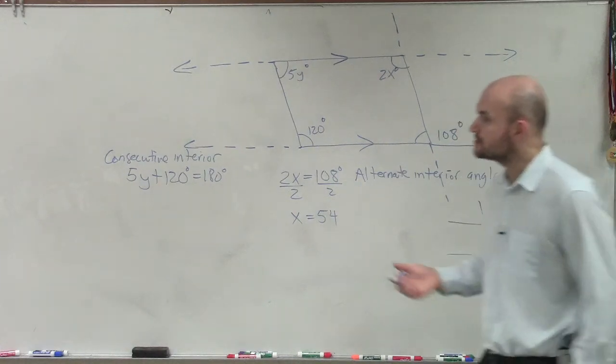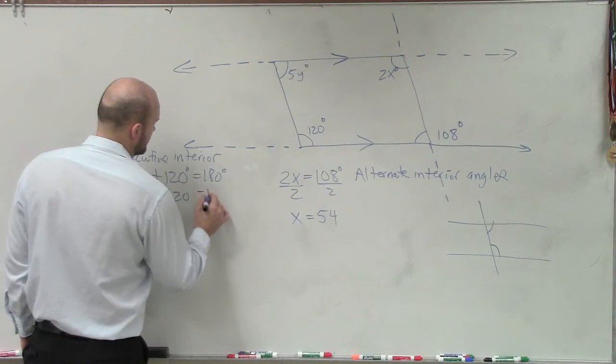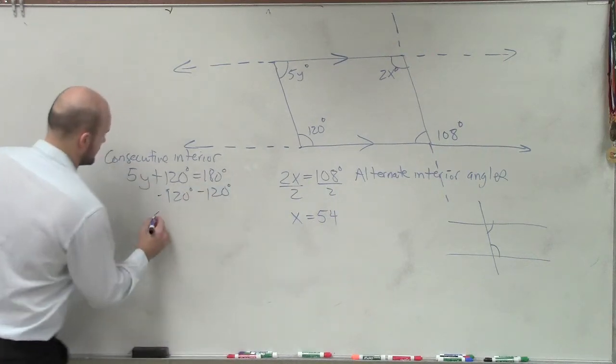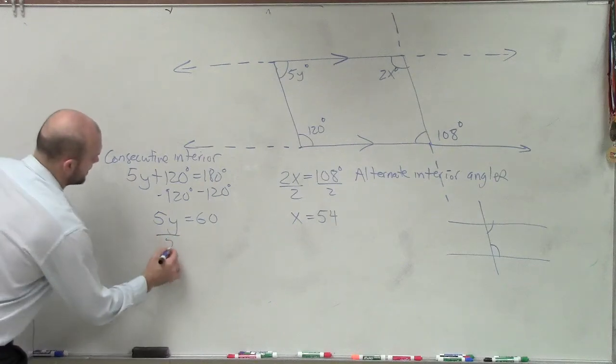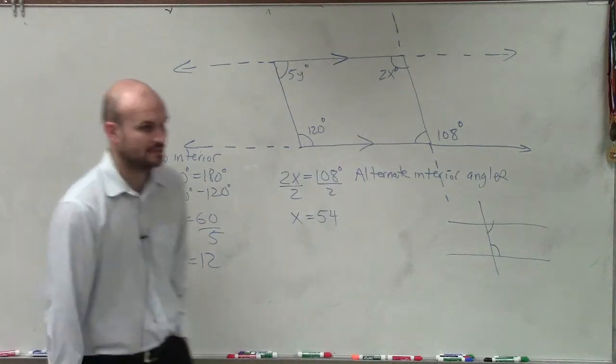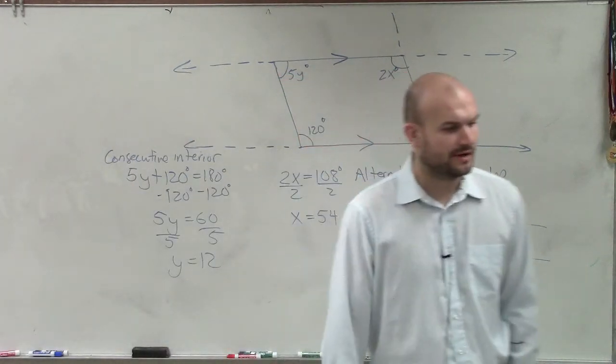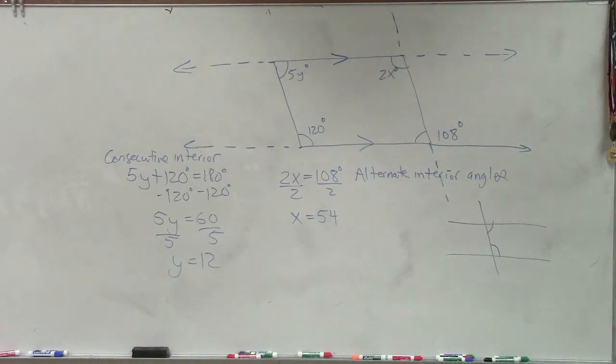All right? So now I just need to solve. So subtract 120, subtract 120, 5y is equal to 60. Divide by 5, divide by 5, y equals 12. Put your thinking cap on and get this stuff working.